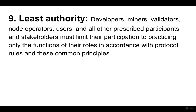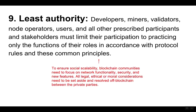Nine, least authority. Developers, miners, validators, node operators, users and all other prescribed participants and stakeholders must limit their participation to practicing only the functions of their roles in accordance with protocol rules and these common principles. To ensure social scalability, blockchain communities need to focus on network functionality, security and new features. All legal, ethical or moral considerations need to be set aside and resolved off blockchain between the private parties.